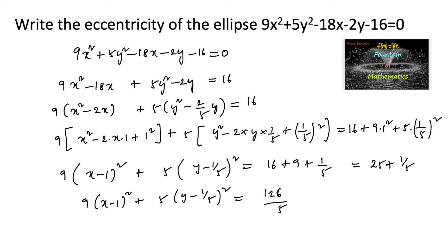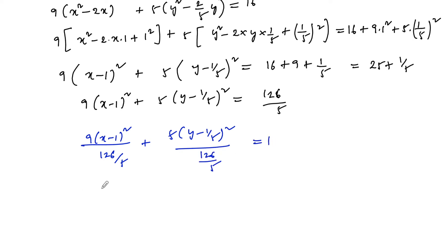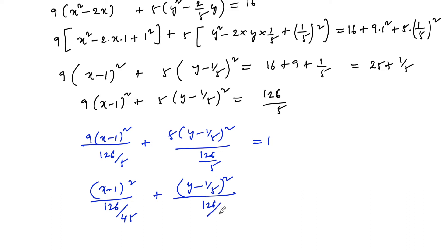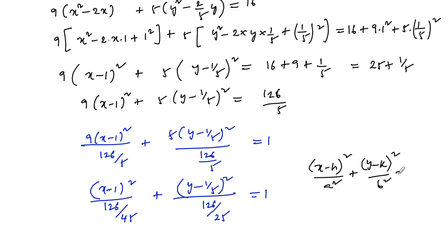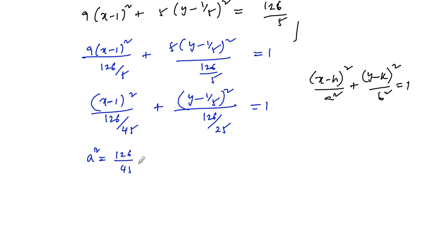Dividing both sides by 126/5, we get (x - 1)²/(126/45) + (y - 1/5)²/(126/25) = 1. Comparing with the standard form (x - h)²/a² + (y - k)²/b² = 1, we have a² = 126/45 and b² = 126/25.